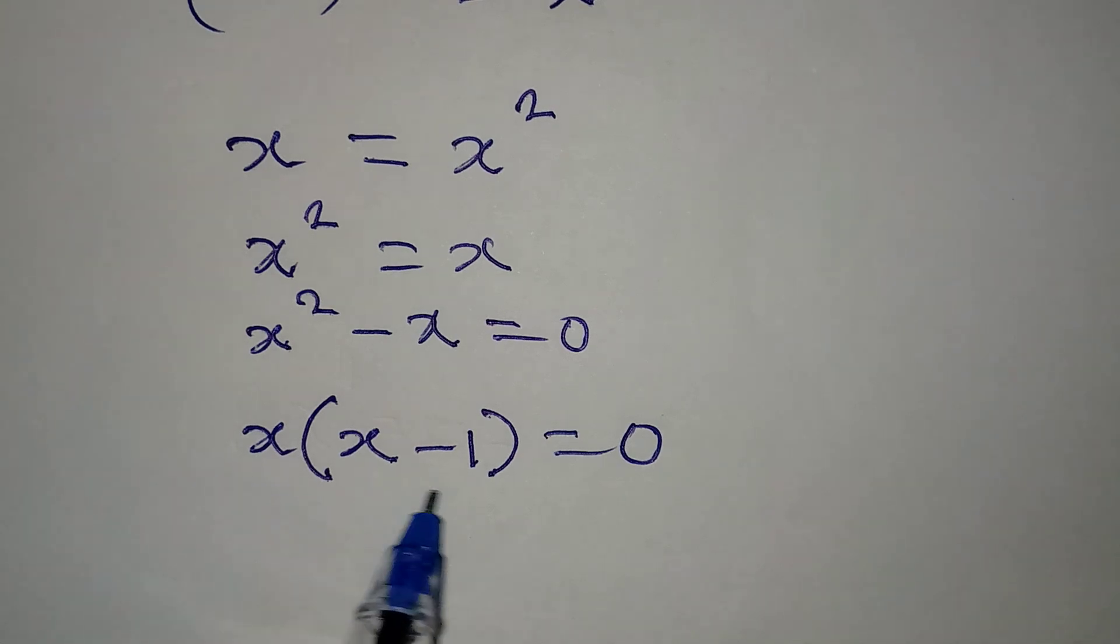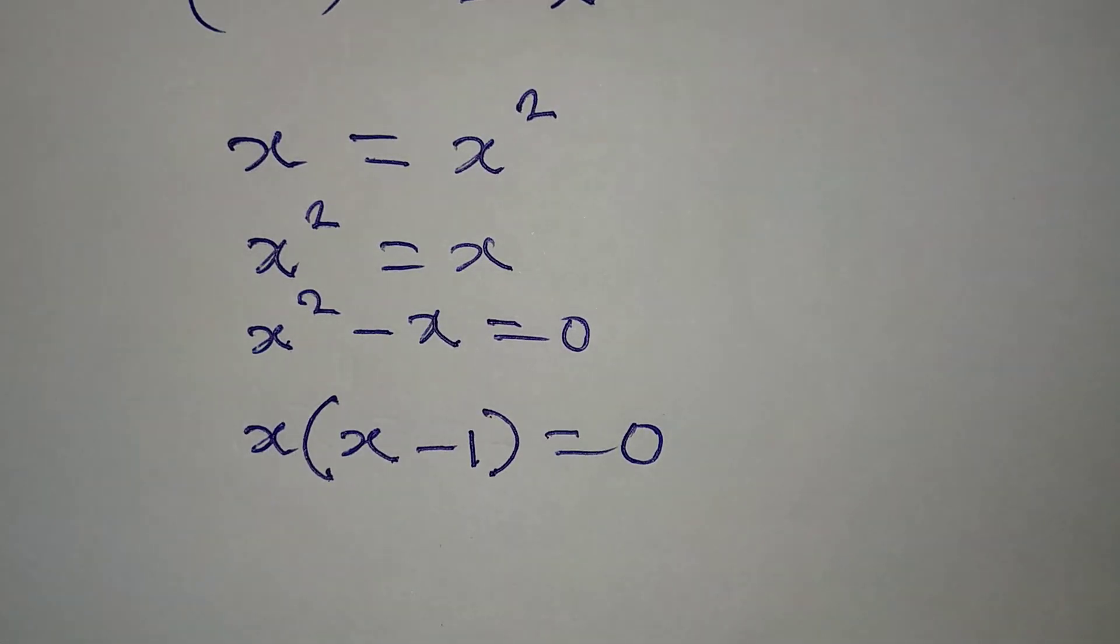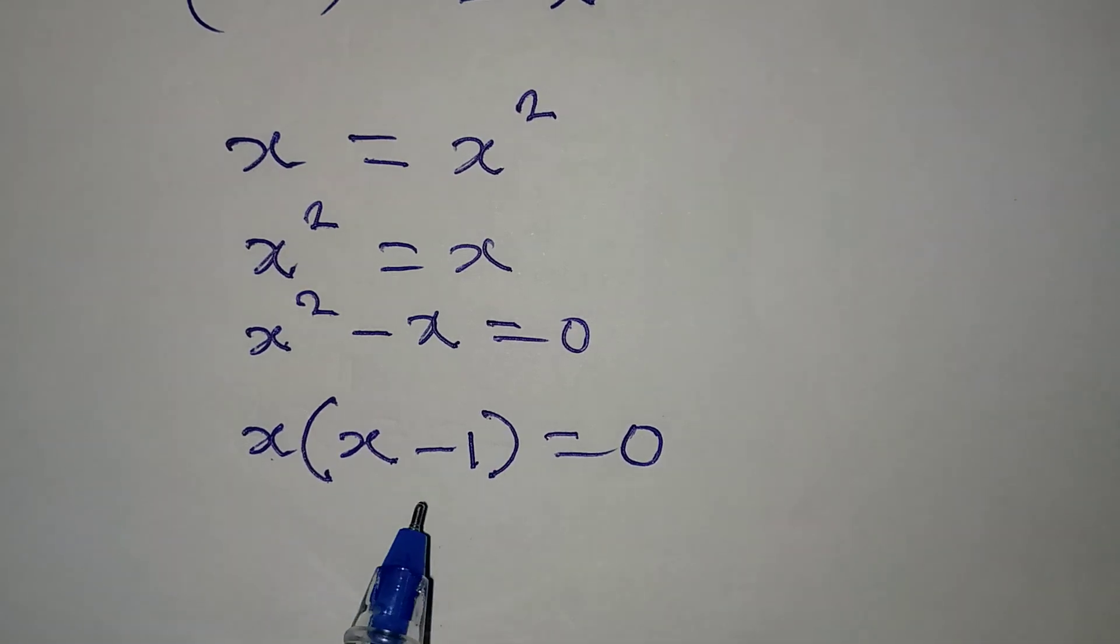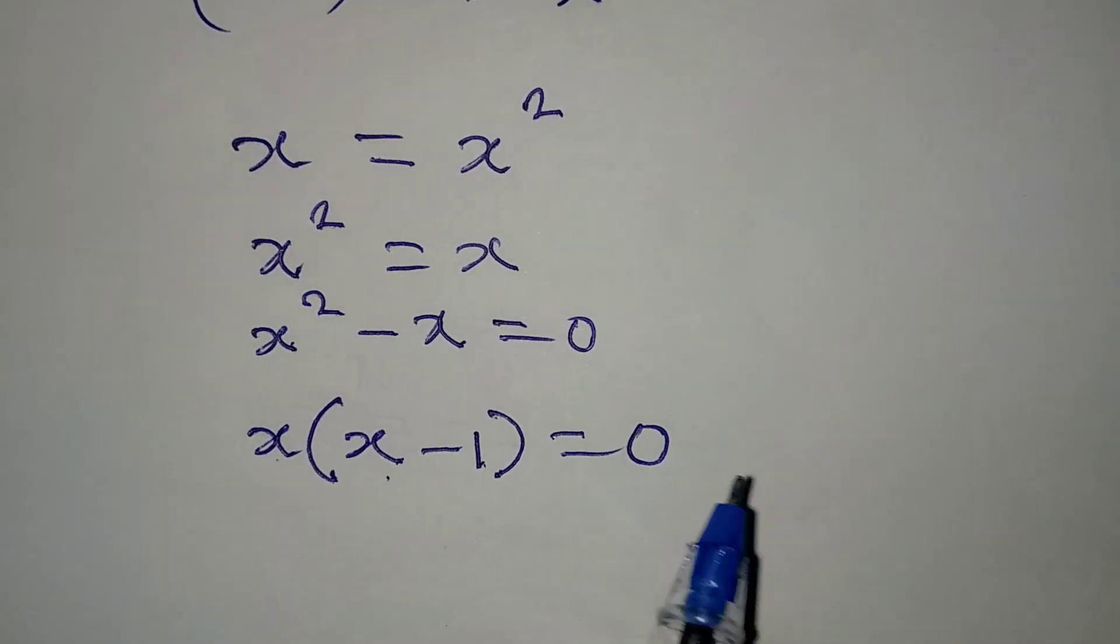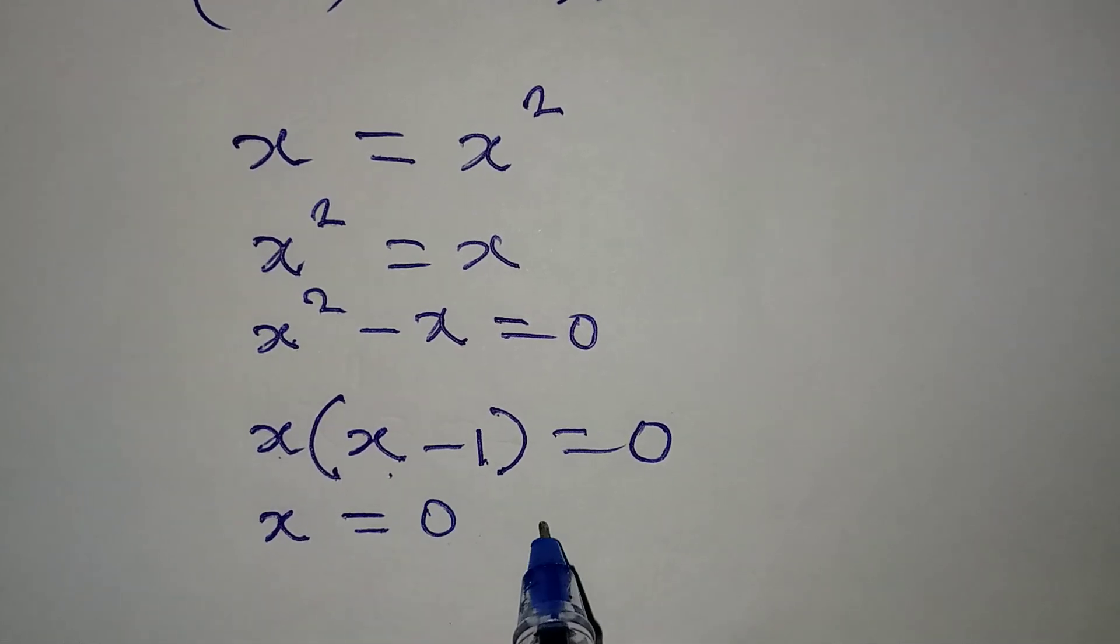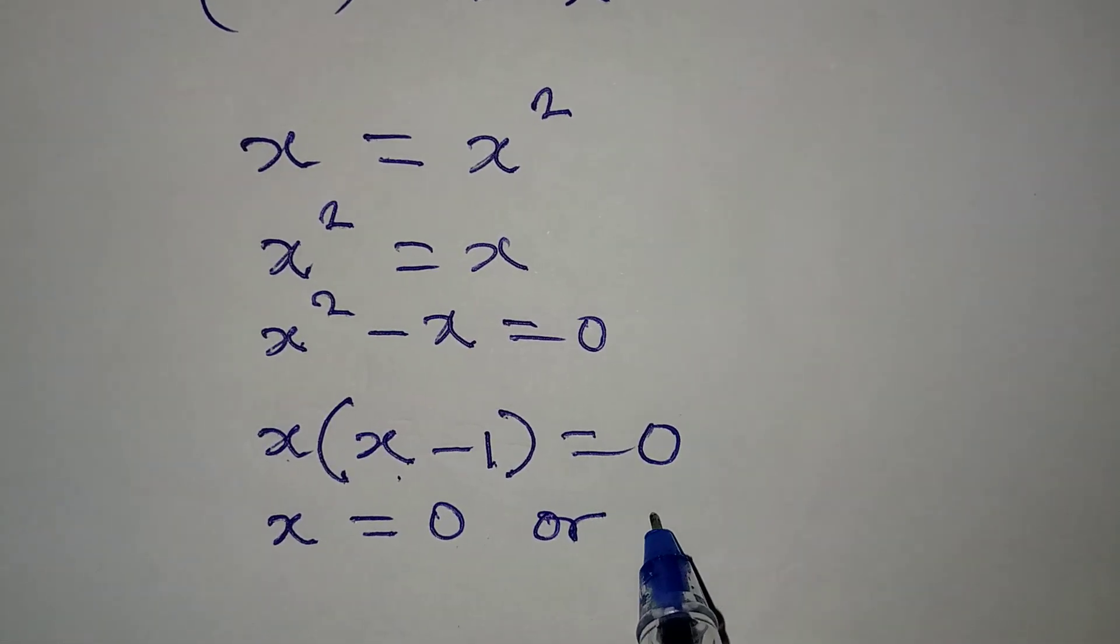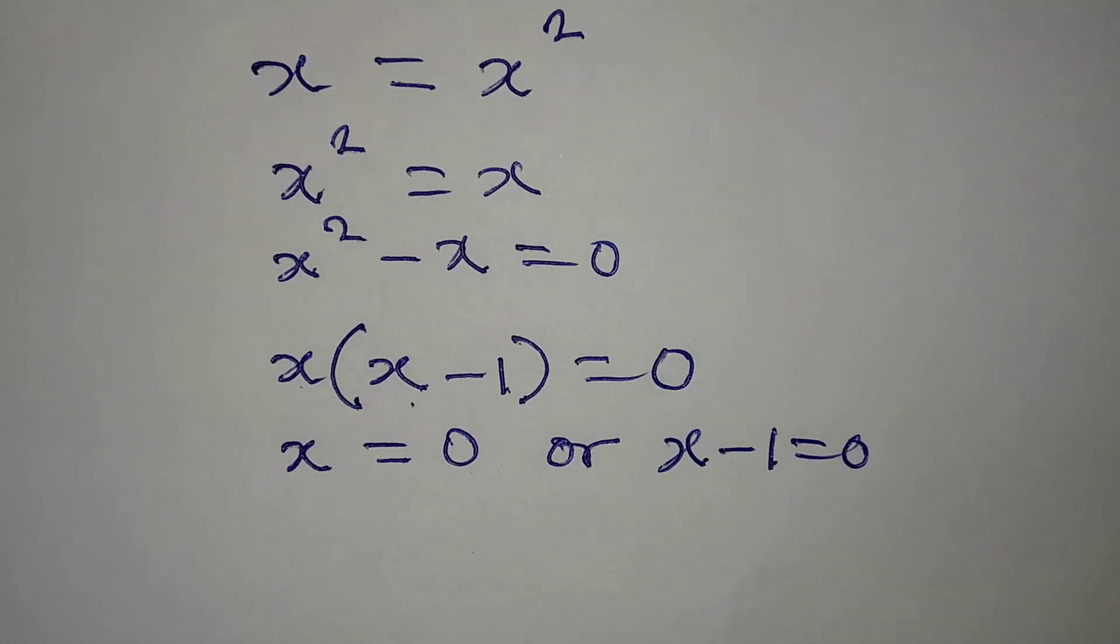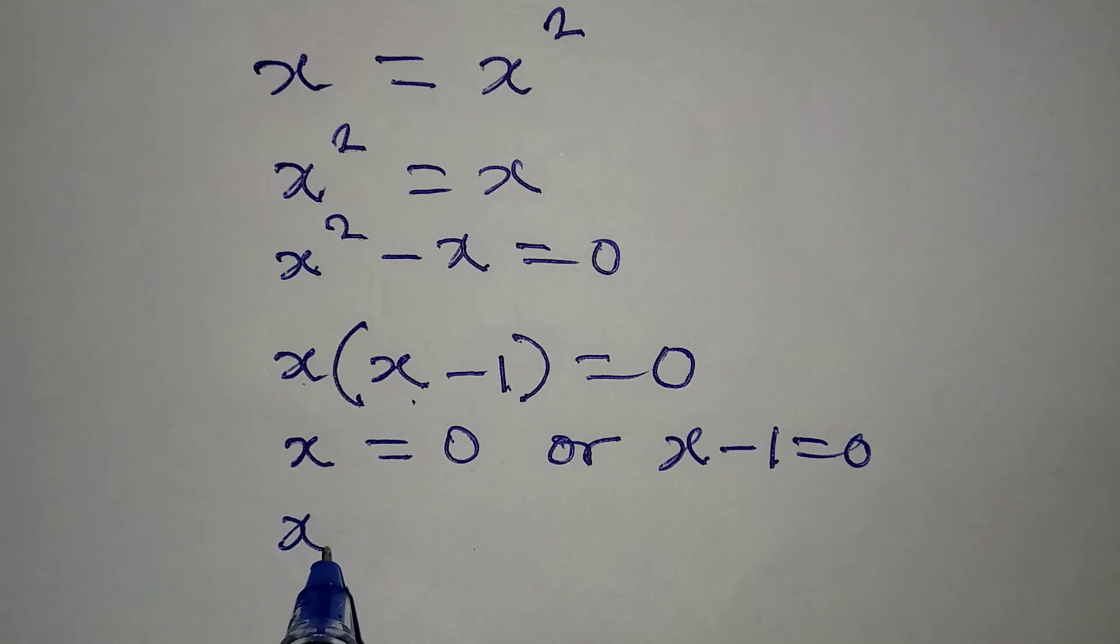Now x is equal to zero, or x minus one is equal to zero. So x here is going to be equal to zero, or on the other side, x minus one is equal to zero, so from here we still have x to be equal to zero.